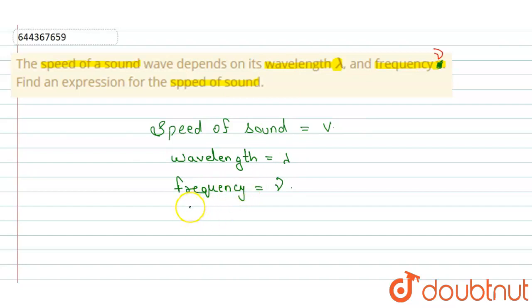According to the question, the speed of sound wave depends on its wavelength lambda and frequency, so we can write that v is directly proportional to lambda^a and mu^b.